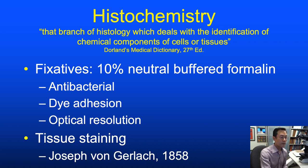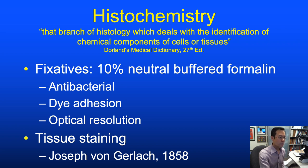Like many great discoveries in science and medicine, tissue staining was discovered accidentally. Legend has it that von Gerlach in 1858 left a piece of cerebellar tissue in a dilute carmine solution overnight, and was pleasantly surprised by what could be visualized the next day.